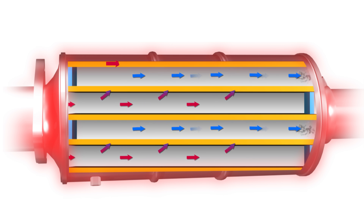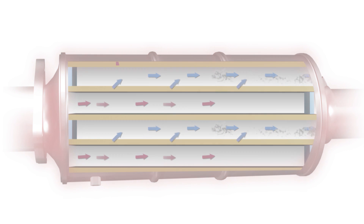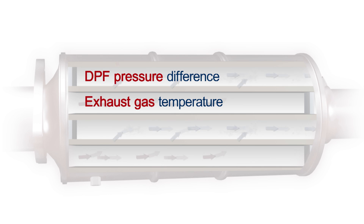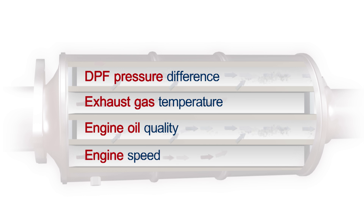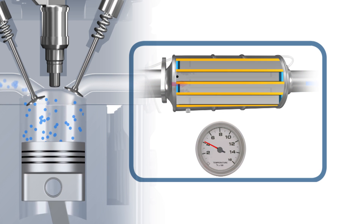The ECM commands the DPF regeneration after calculating various vehicle conditions such as DPF pressure difference, exhaust gas temperature, engine oil quality, engine speed, and so on. Excessive accumulation of soot in the DPF can cause a drop in engine performance.